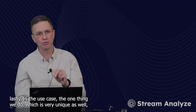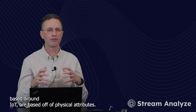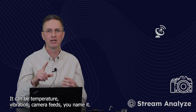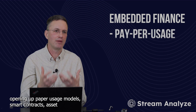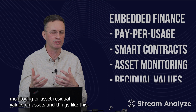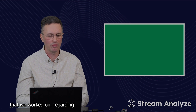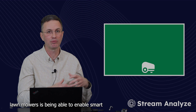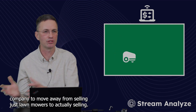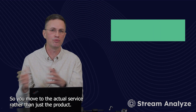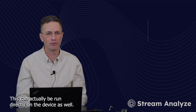Lastly, in the use cases, one thing we do which is very unique as well — many of these AI models done today based around IoT are based off of physical attributes. It can be temperature, vibration, camera feeds, you name it. But what we can complement this with is financial models, opening up pay-per-usage models, smart contracts, asset monitoring or asset residual values on assets and things like this. So one example is a project that we worked on regarding lawn mowers — being able to enable smart contracts directly on these lawn mowers, allowing the company to move away from selling just lawn mowers to actually selling mowed lawns. So you move to the actual service rather than just the product. And we don't have to offload that data — this can actually be run directly on the device as well.